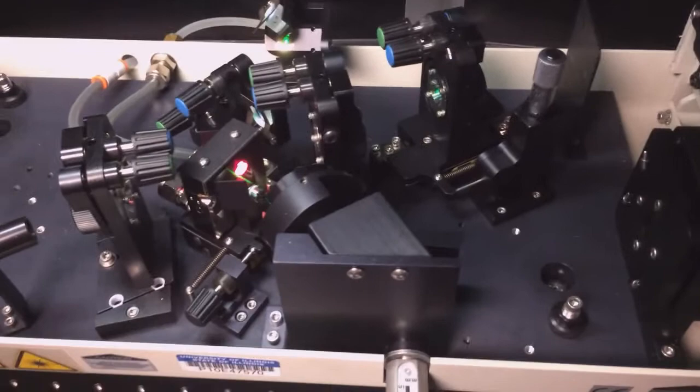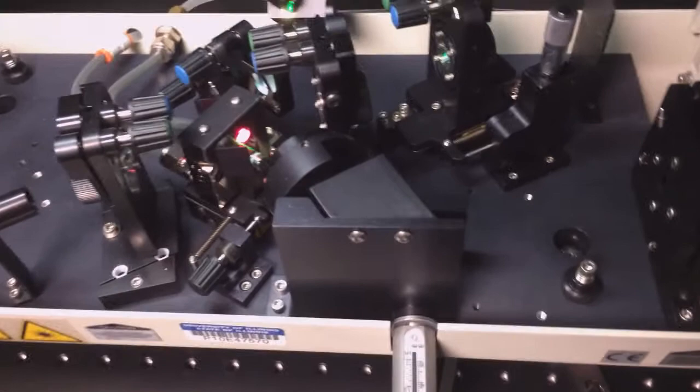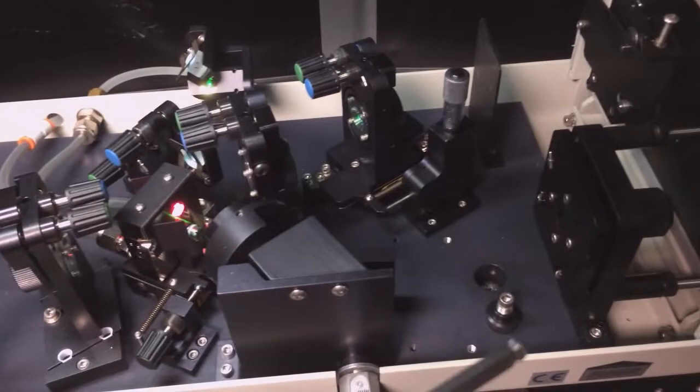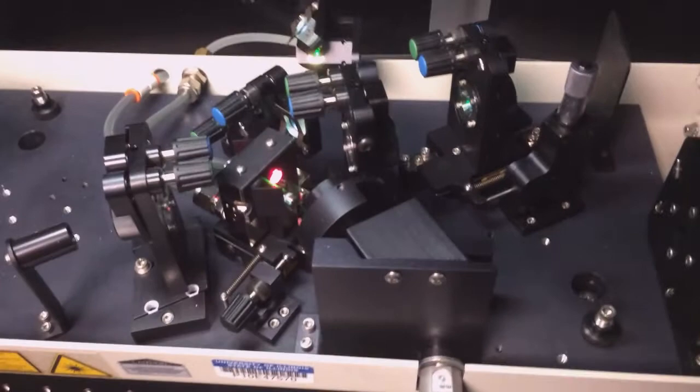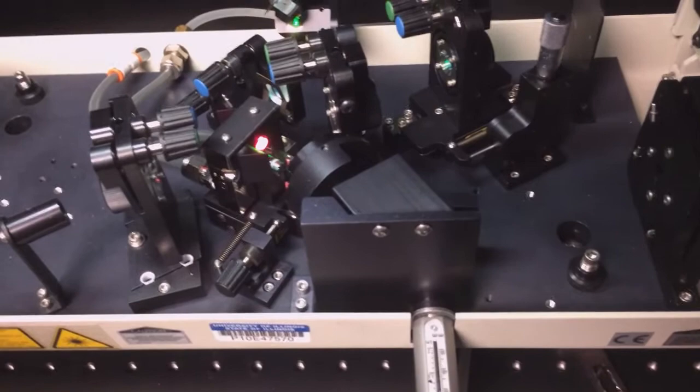So the green light excites the crystal and it fluoresces in all different directions. But the output coupler and the back reflector define the cavity for the laser. But although there is fluorescence in all sorts of directions, the laser works most efficiently when the laser cavity is aligned with the 532 beam.